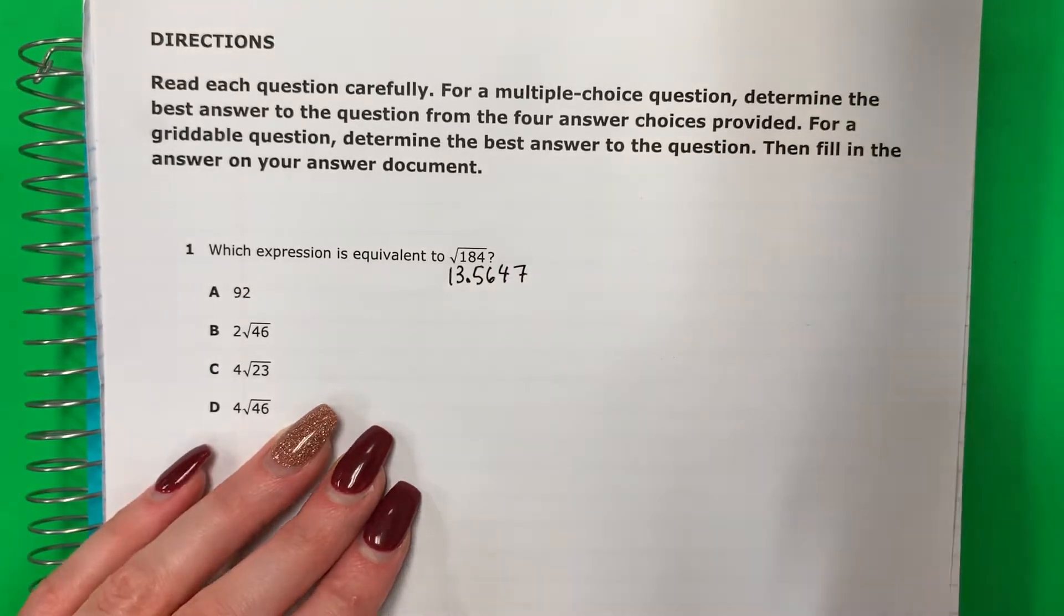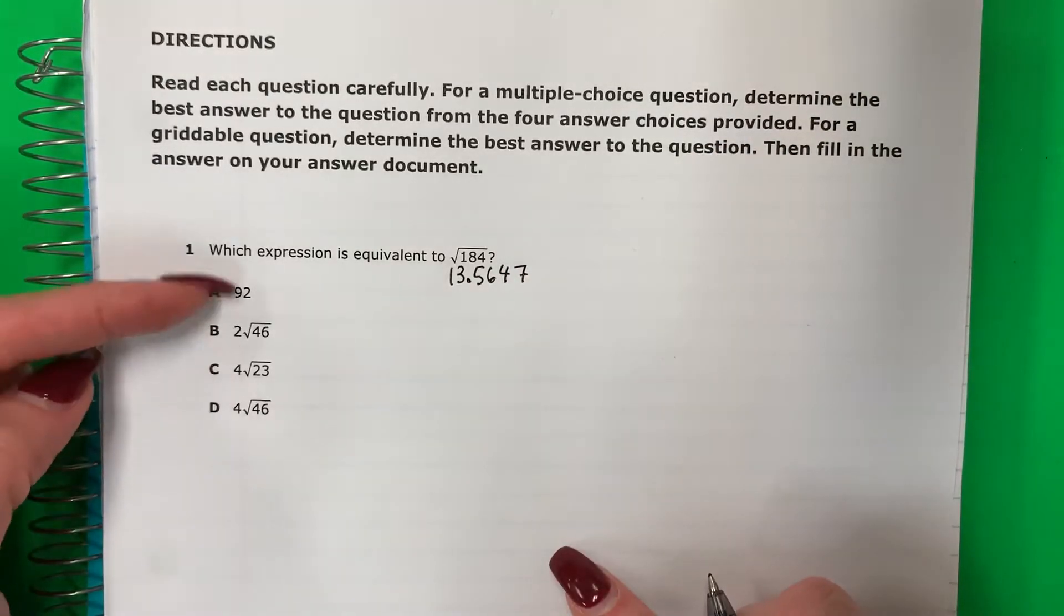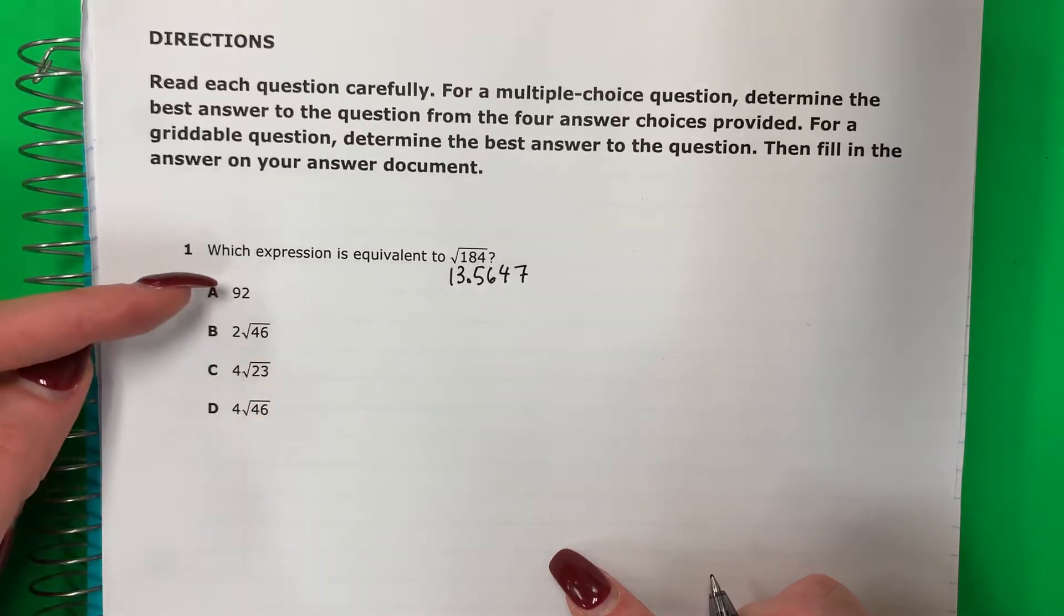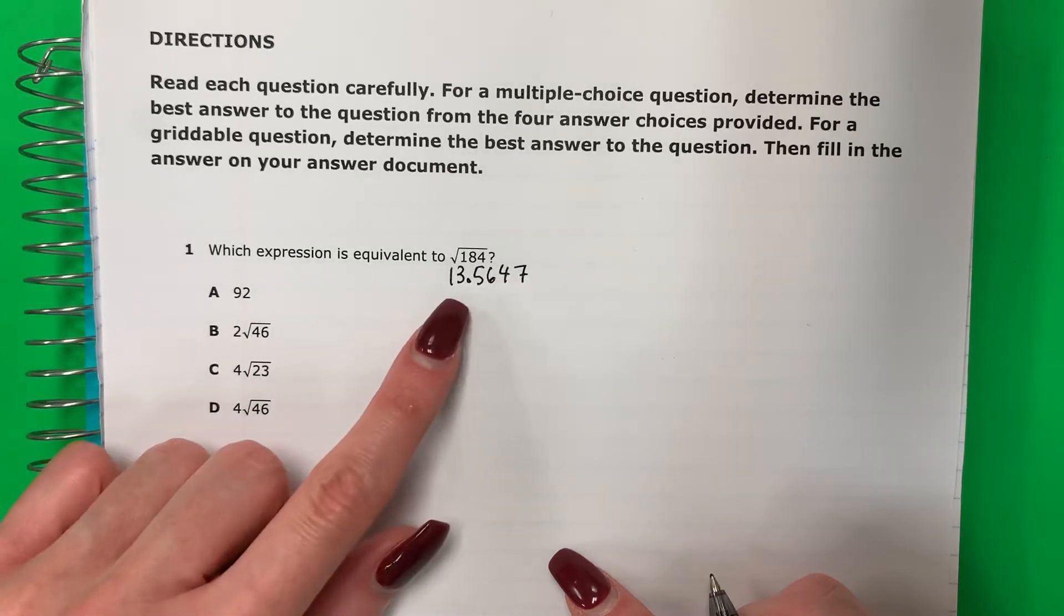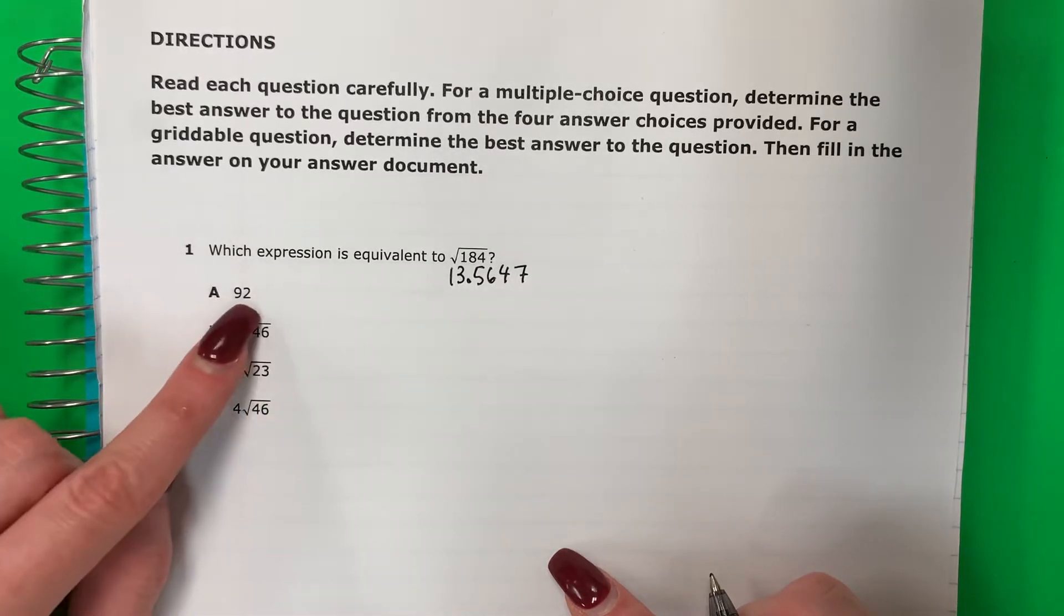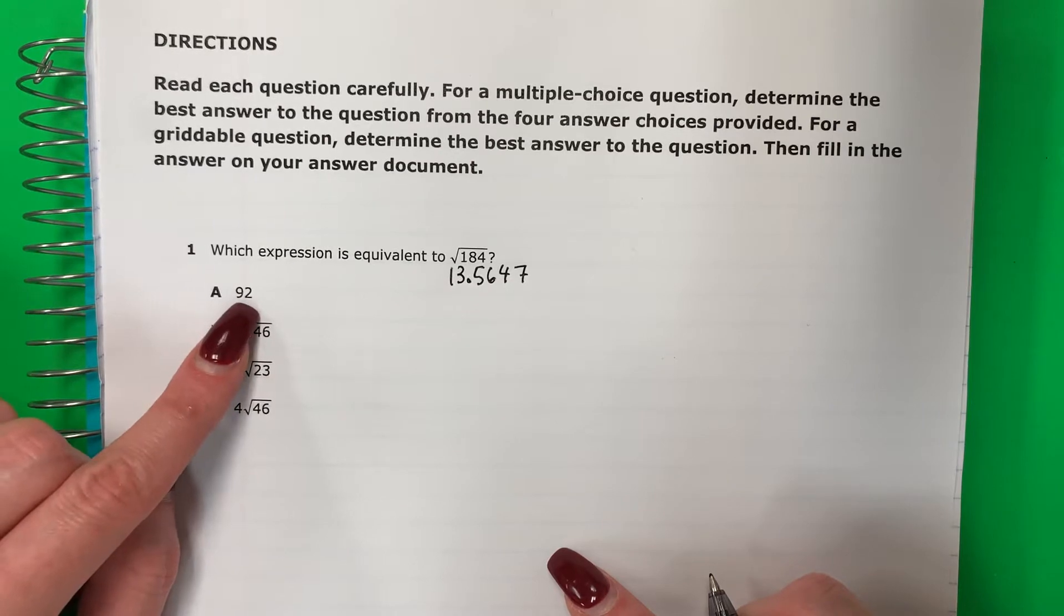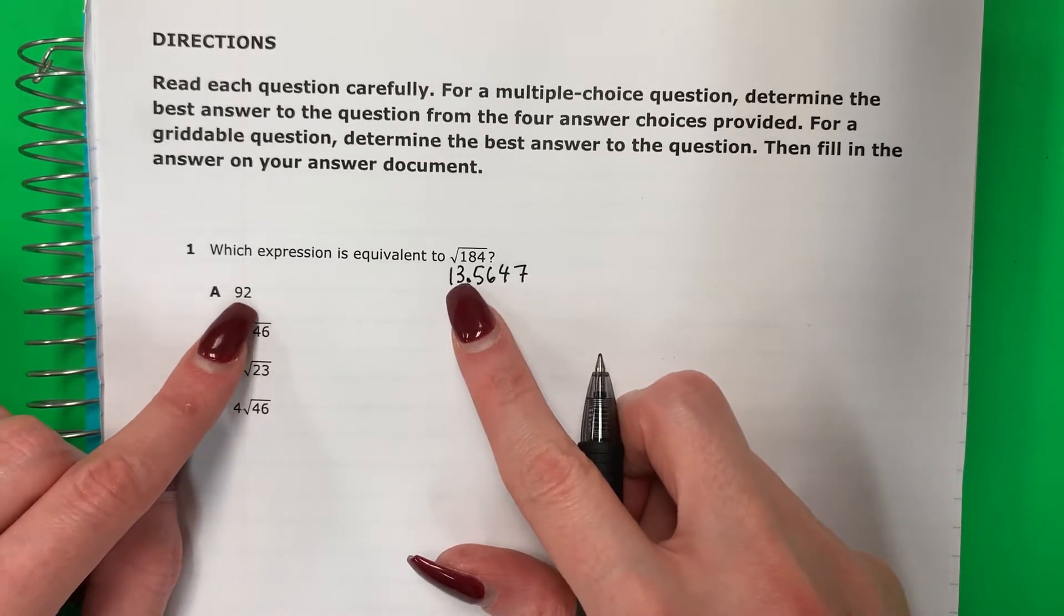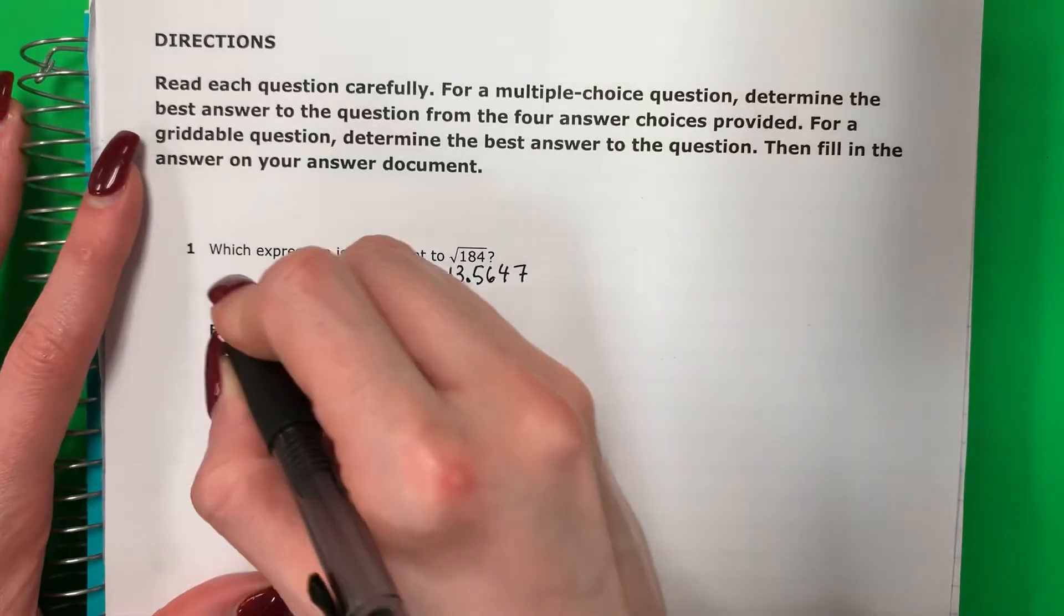Now I need to see which of these is going to get me 13.5647. Ahora necesito ver cuáles de estos tiene la respuesta 13.5647. So this one, obviously, no. Esta obvio, no. 92 is not equal to 13. 92 no es igual a 13. So that's a no.